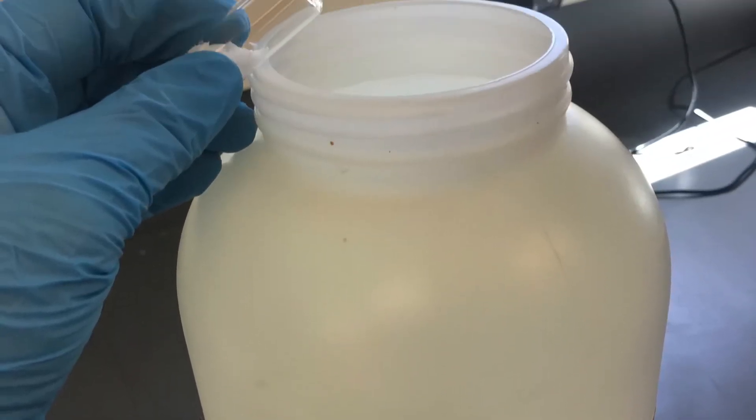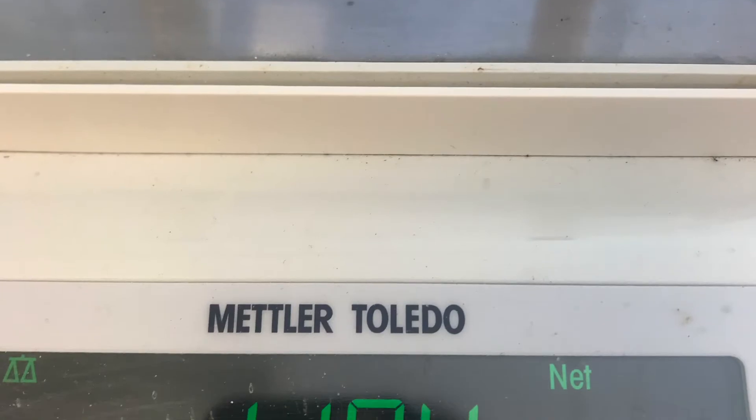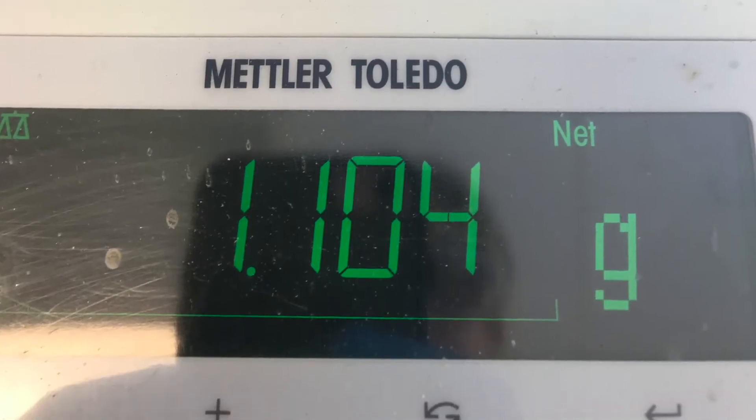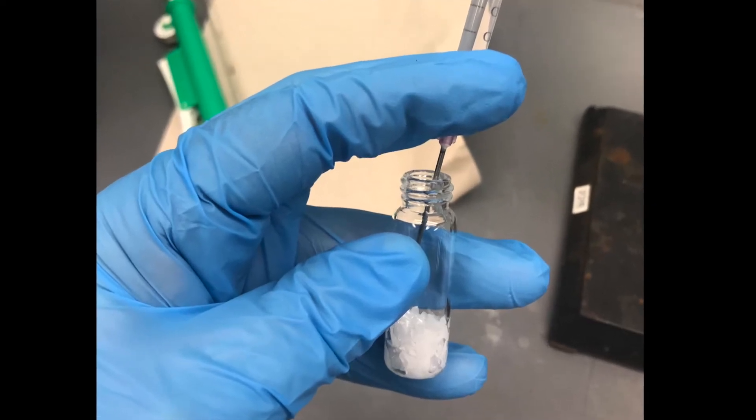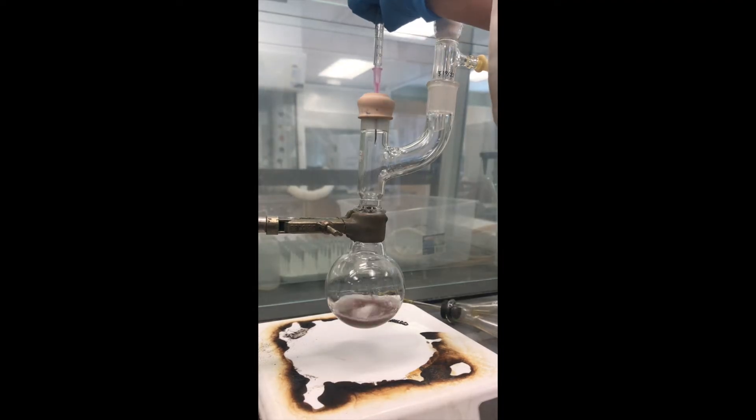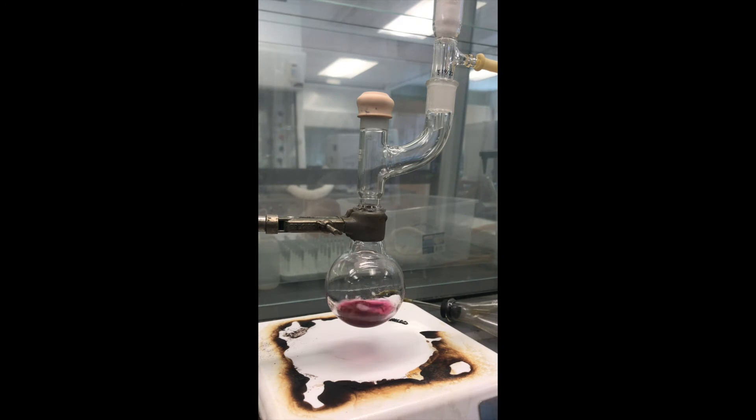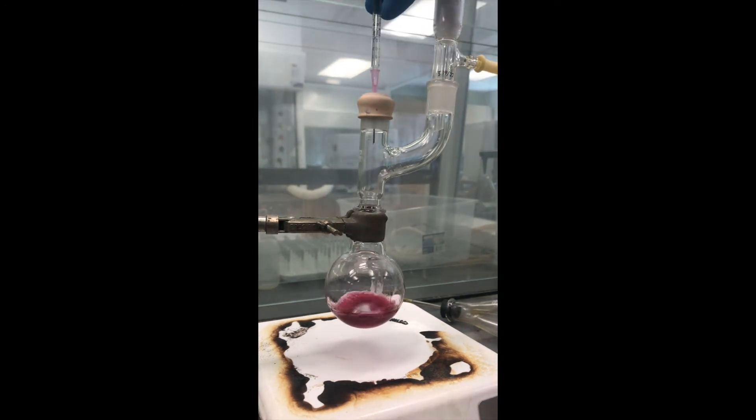The ketone that we will be using in this reaction is benzophenone. And we are going to take 1.09 grams of benzophenone and mix that with 2 milliliters of anhydrous diethyl ether. Using a syringe, I added the benzophenone ether mixture to my reaction and then monitored the reaction over the next 15 minutes.